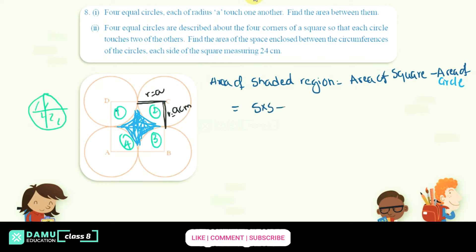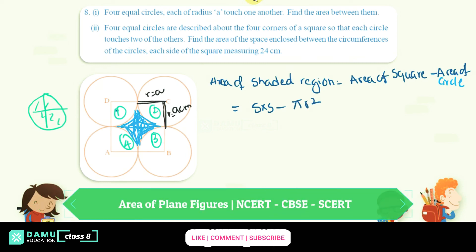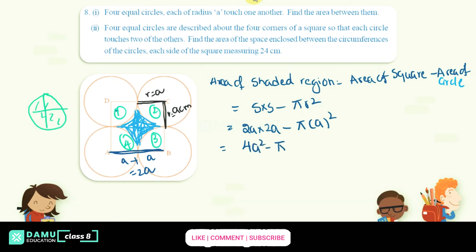Area of square is side into side minus area of circle phi r square. So here side will be equal to circle a plus a, that will be equal to 2a. So let's take side will be equal to 2a into 2a minus